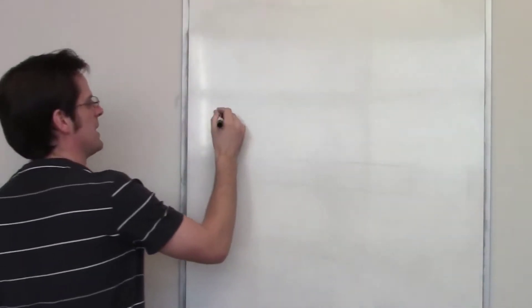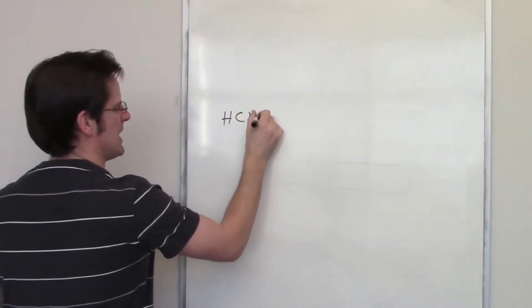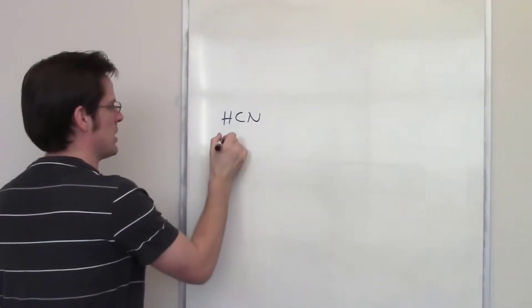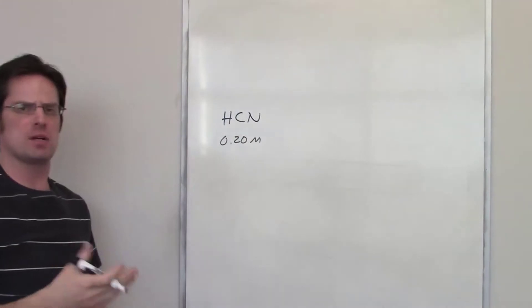In this problem we're given a weak acid, hydrocyanic acid HCN, and we're given an initial concentration of 0.20 molar. Some concentration.